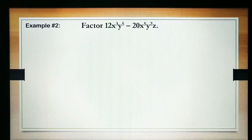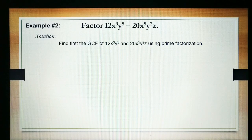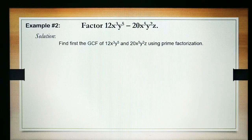Let's have another example. Factor 12x cubed y to the 5th power minus 20x to the 5th power y squared z. First, find the GCF of the two terms — 12x cubed y to the 5th power and 20x to the 5th power y squared z — using prime factorization.